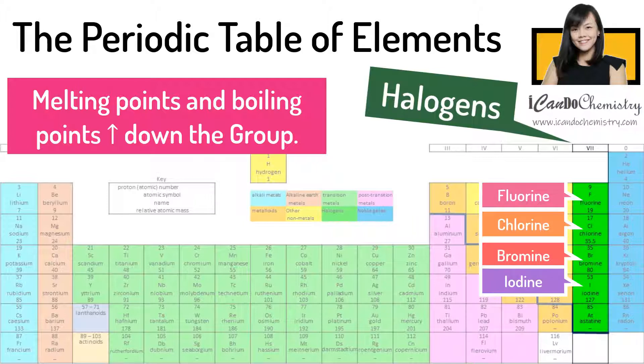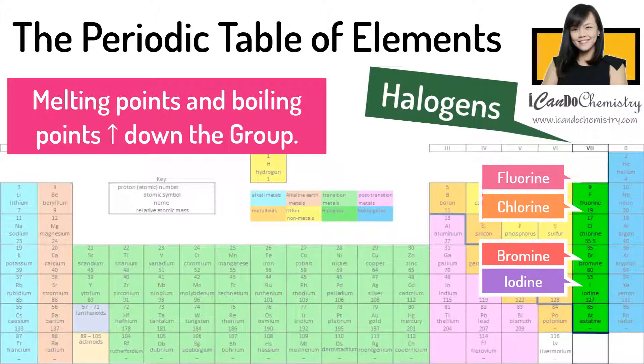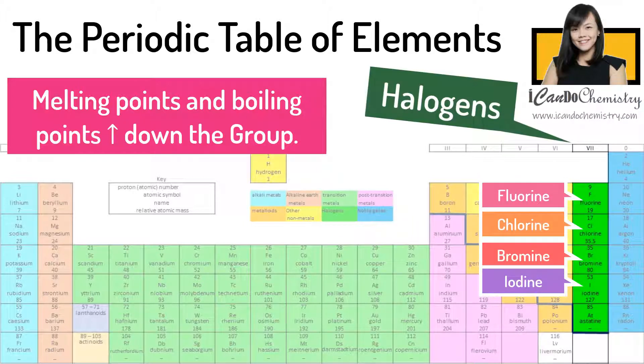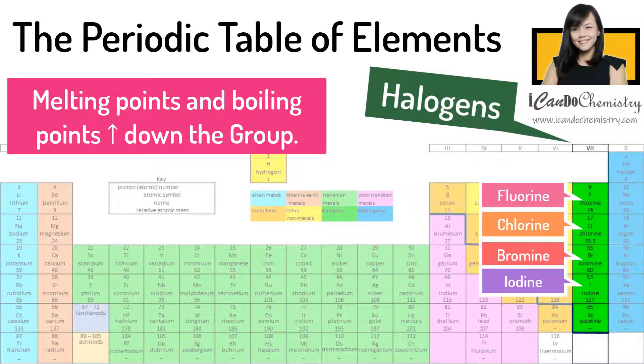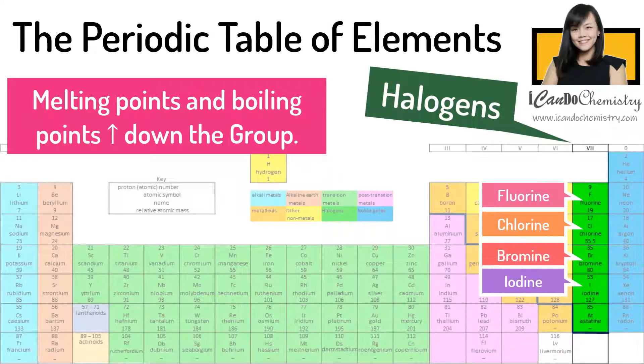At room conditions, fluorine and chlorine exist as gases. Bromine exists as liquid, while iodine exists as solid.